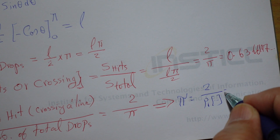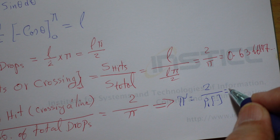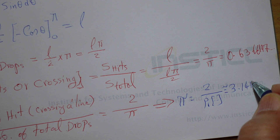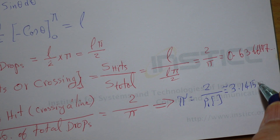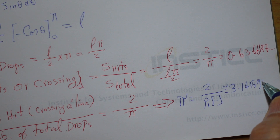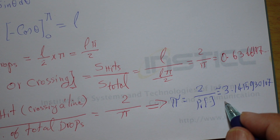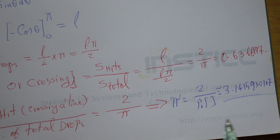Using this method I calculated approximately 3.1415 — though my result here came out to around 9.301097, which is not exact. The more drops you perform, the closer to the true value of pi you get.